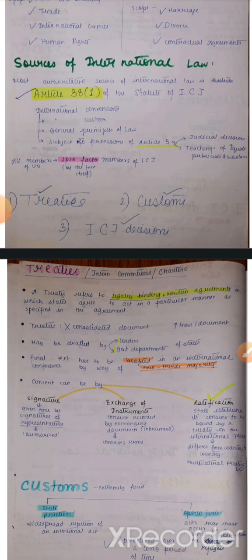Now, all members of the UN — jo bhi humare 193 members hain, United Nations ki — they are ipso facto members of ICJ. Ipso facto means by the fact itself.